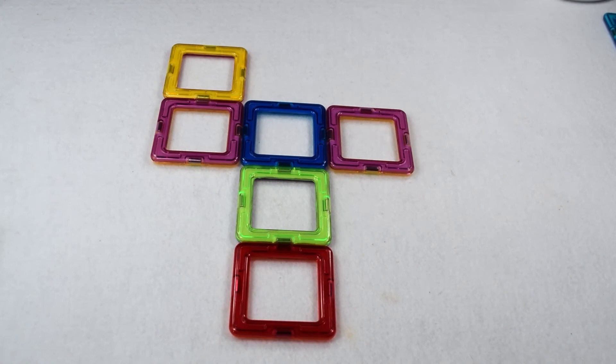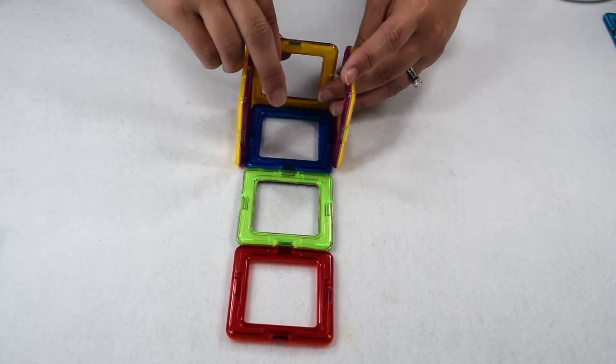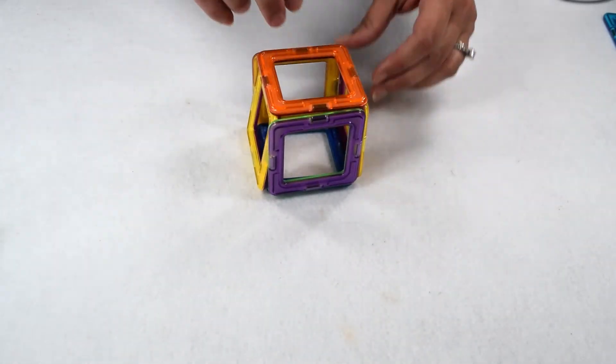We're once again going to rearrange our T by moving one square from the bottom and adding it up here to the top. When we do that, we see that we can still fold up our faces in order to make a cube.